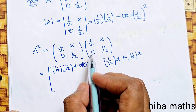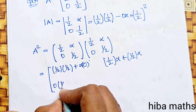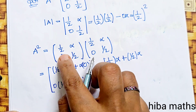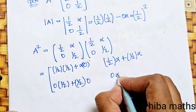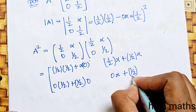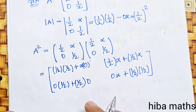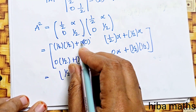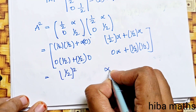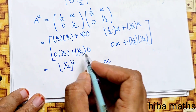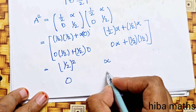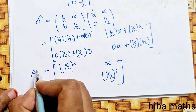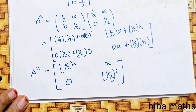The second row, first column: 0·(1/2) + (1/2)·0 = 0. The second row, second column: 0·α + (1/2)·(1/2) = 1/4. So A squared equals [[1/4, α], [0, 1/4]], where 1/4 = (1/2)².